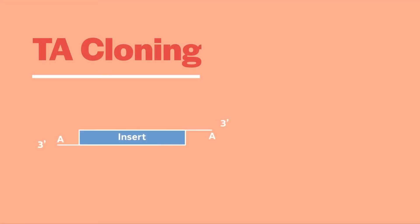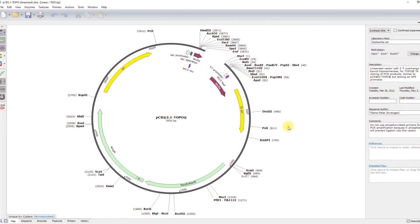A category of cloning vectors have been developed to take advantage of this untemplated A. These vectors are purchased pre-linearized with a complementary T overhang, and ligation is driven with ligase. This technique is referred to as TA cloning. A more efficient variant of TA cloning is topo-TA cloning, in which ligation is driven by the enzyme topoisomerase.